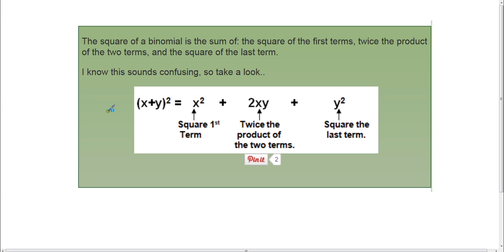So that sounds a little confusing. But if we use this generic example and we take x plus y and square it, all this means is that we're going to take the first term and square it, plus two times the product of x and y, plus this last term y squared.